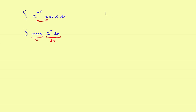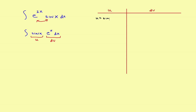I'll set up two columns — a u column and a dv column — and this one's actually going to wind up being pretty long because it'll take u substitution. So in this problem, u is equal to the sine of x. And dv will be equal to e to the 2x dx.